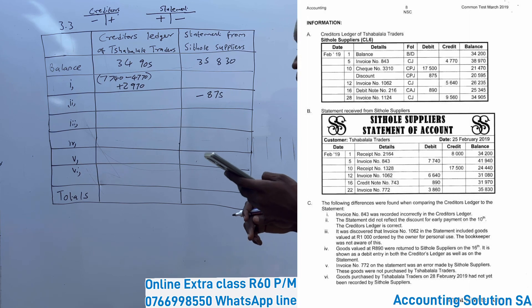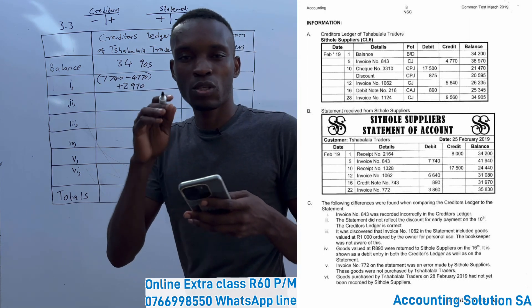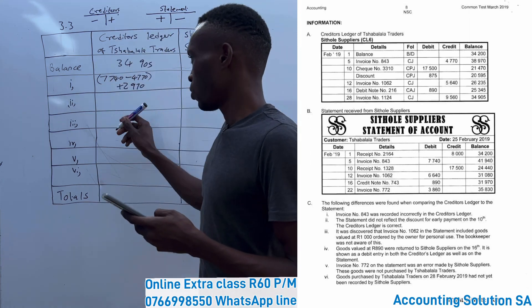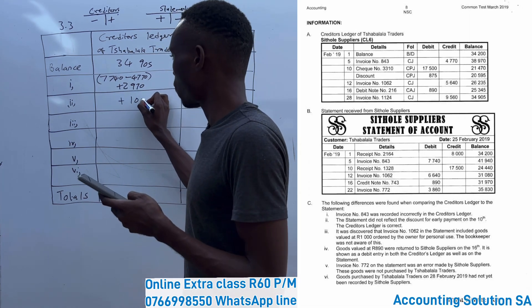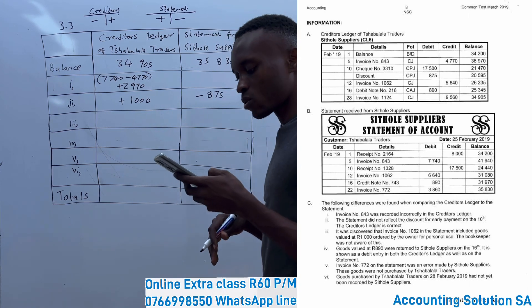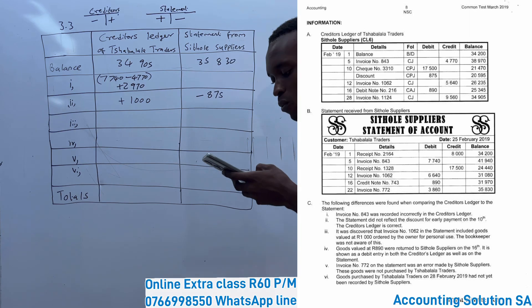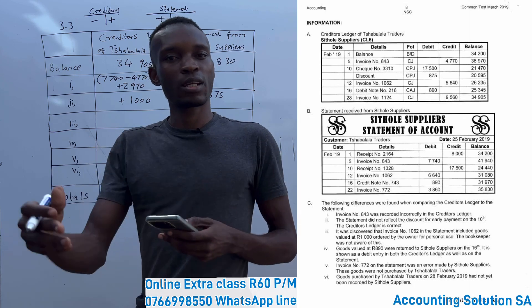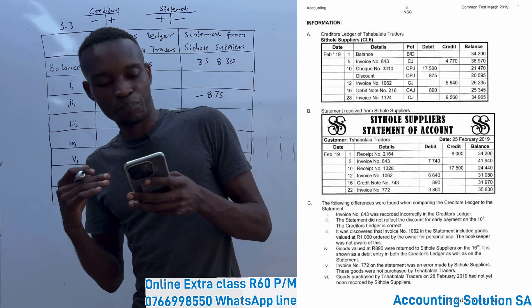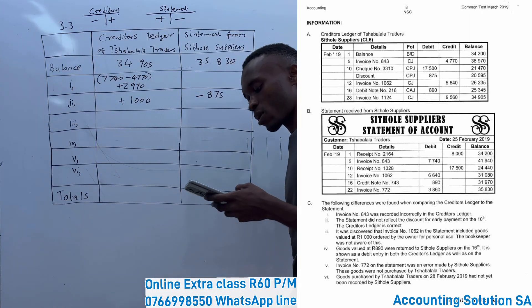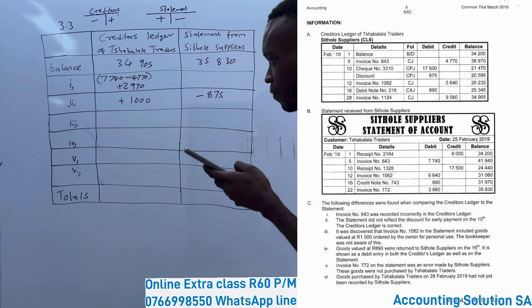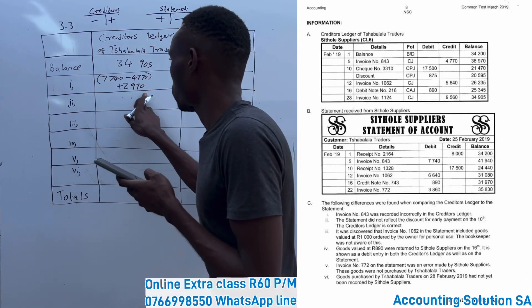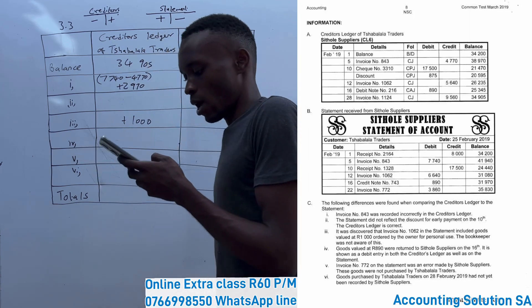The bookkeeper did not record this amount — only the statement recorded it. So we have to add R1,000 to the creditors ledger account. When you purchase on credit, the liability goes up. An invoice is received when we purchase items on credit. So this is a plus R1,000 on the creditors ledger side.